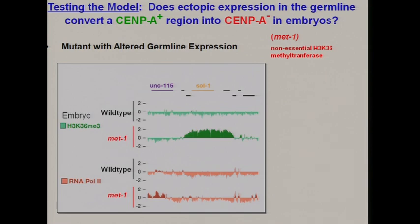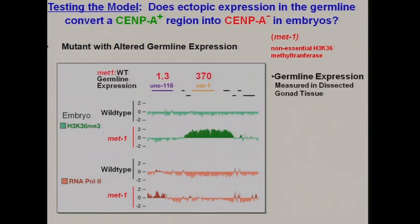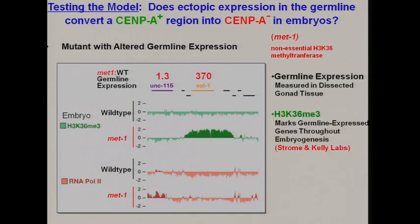The new model was that it's actually germline transcription that defines the regions from which CENP-A is excluded in the embryo. We're talking about a truly epigenetic phenomenon where the maternal germline defines the centromere positions in the developing embryo: if germline transcription was on, the region is not permissive for CENP-A; if germline transcription was off, it is permissive. We can test this model by driving ectopic expression in the germline using a mutant called MET1. One gene is 370-fold overexpressed, and H3K36 trimethylation in embryos marks germline-expressed genes throughout embryogenesis.